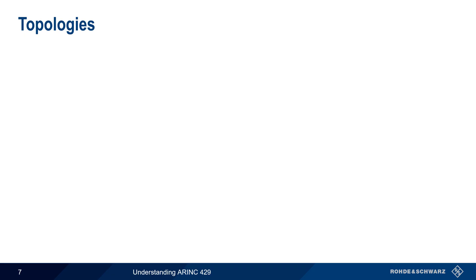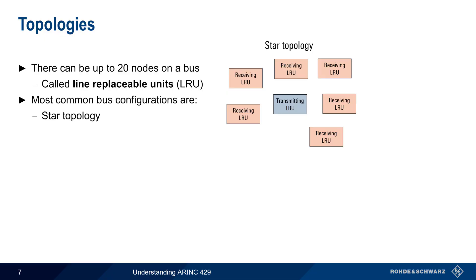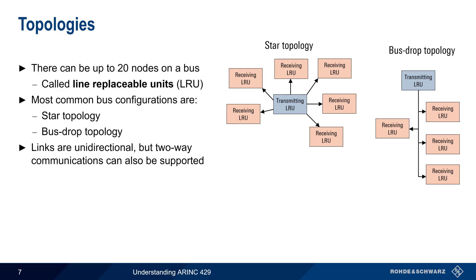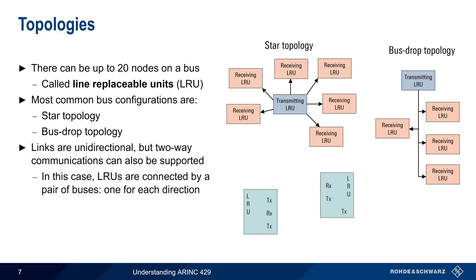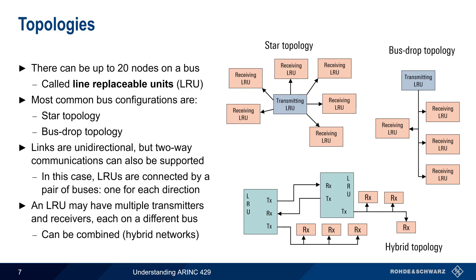There can be up to 20 ARINC 429 nodes on a single bus, and these nodes are often referred to as Line Replaceable Units or LRUs. Transmitting and receiving LRUs can be arranged in different configurations or topologies, the most common of which are the star topology and the bus drop topology. Although ARINC 429 links are unidirectional, it is possible to support two-way communication by using a pair of buses, one for each direction. A single LRU may also have multiple transmitters and receivers, allowing the creation of sub-networks or networks with a hybrid-type topology.